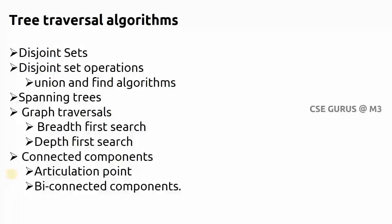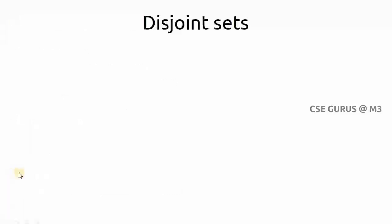Hi friends, welcome to the class of Design and Analysis of Algorithms. In the coming lessons I want to explain the following topics in tree traversal algorithms. The topics I want to cover are: disjoint sets, set operations, spanning trees, graph traversal methods like breadth-first and depth-first search, connected components, articulation points, and biconnected components — we will see each one with respect to algorithms.